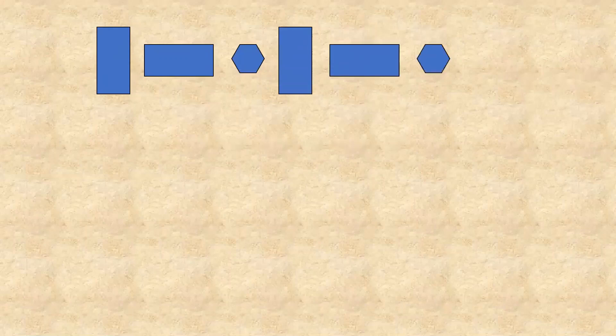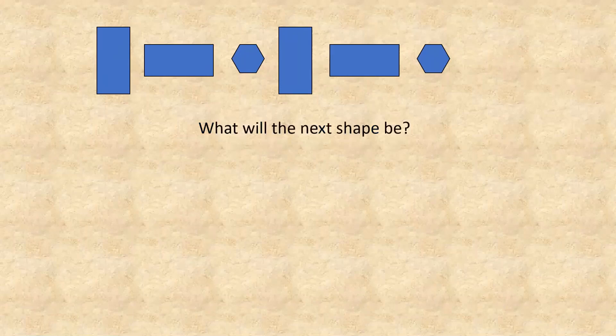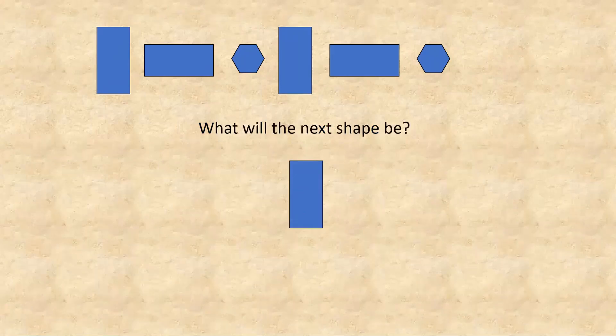This is a design of three shapes repeated. Vertical rectangle, vertical rectangle, hexagon — three shapes repeating. So can you guess the next shape? Yes, vertical rectangle.